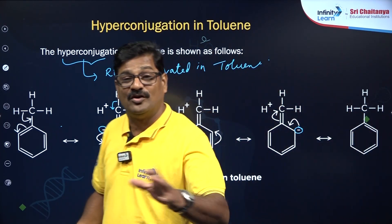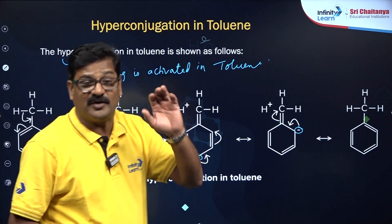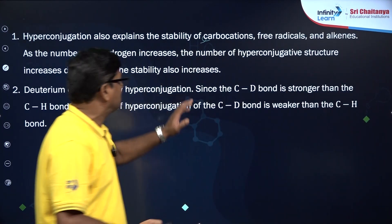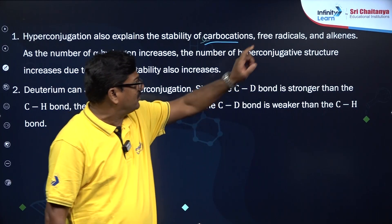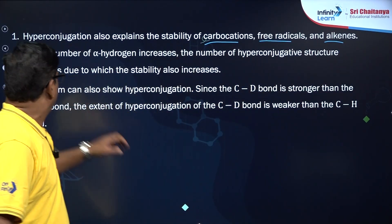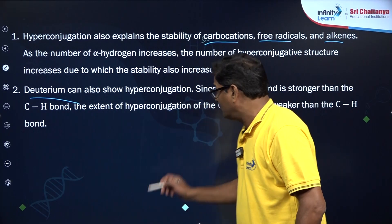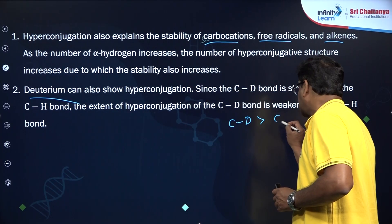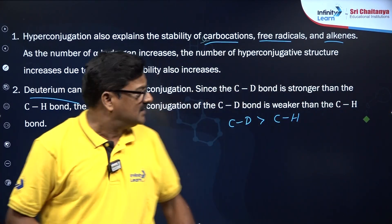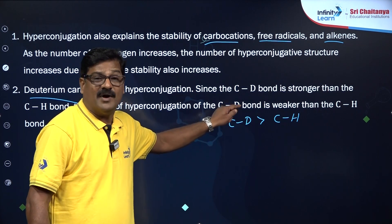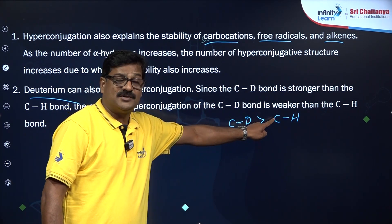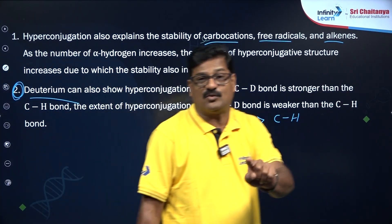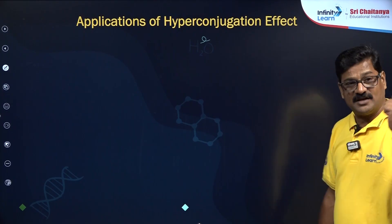Due to hyperconjugation, toluene is an ortho and para director — and this is due to hyperconjugation, not due to the positive inductive effect. Also, regarding deuterium: the carbon-to-deuterium bond is stronger compared to the carbon-to-hydrogen bond. As a result, where there is a C–D bond, hyperconjugation is less, and where there is a C–H bond, hyperconjugation is greater. This is a noteworthy point for NEET examination questions.